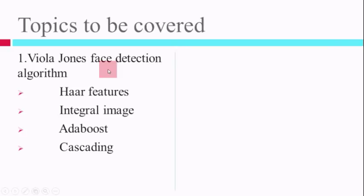Once the computer is trained, it will extract certain features and everything will be stored in a file. We take that file, and if we get any new input image, we check the features from that file and apply it to the image. If it passes through all the stages of that feature comparison, we say that it is a face; else it is not a face. This is exactly what a computer does — digital cameras and mobile cameras do exactly the same things to detect faces.